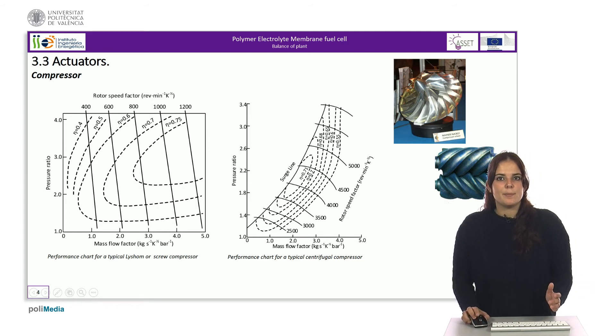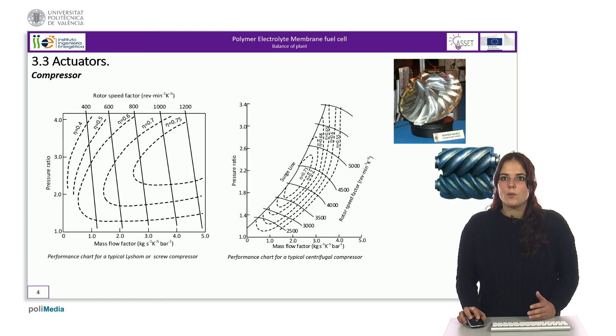If the power delivered by the fuel cell is small, the air mass required will be small. This forces the compressor to work in the area with low pressure ratio. Therefore, the pressure at the cathode is lower than the hydrogen at the anode, and the membrane suffers.